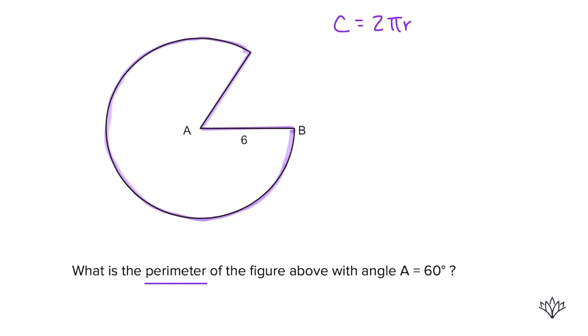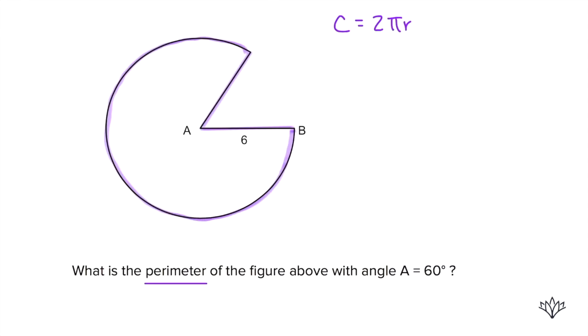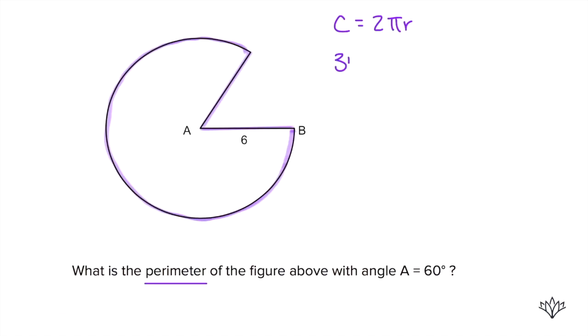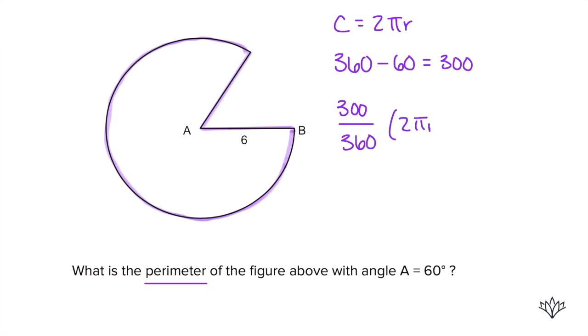What part are we dealing with? A total circle has 360 degrees. In this circle, how many of those degrees are missing? It tells us angle A — the part that's missing — is 60 degrees. So 360 minus 60 is 300. We're dealing with 300 out of 360 degrees of the circumference.